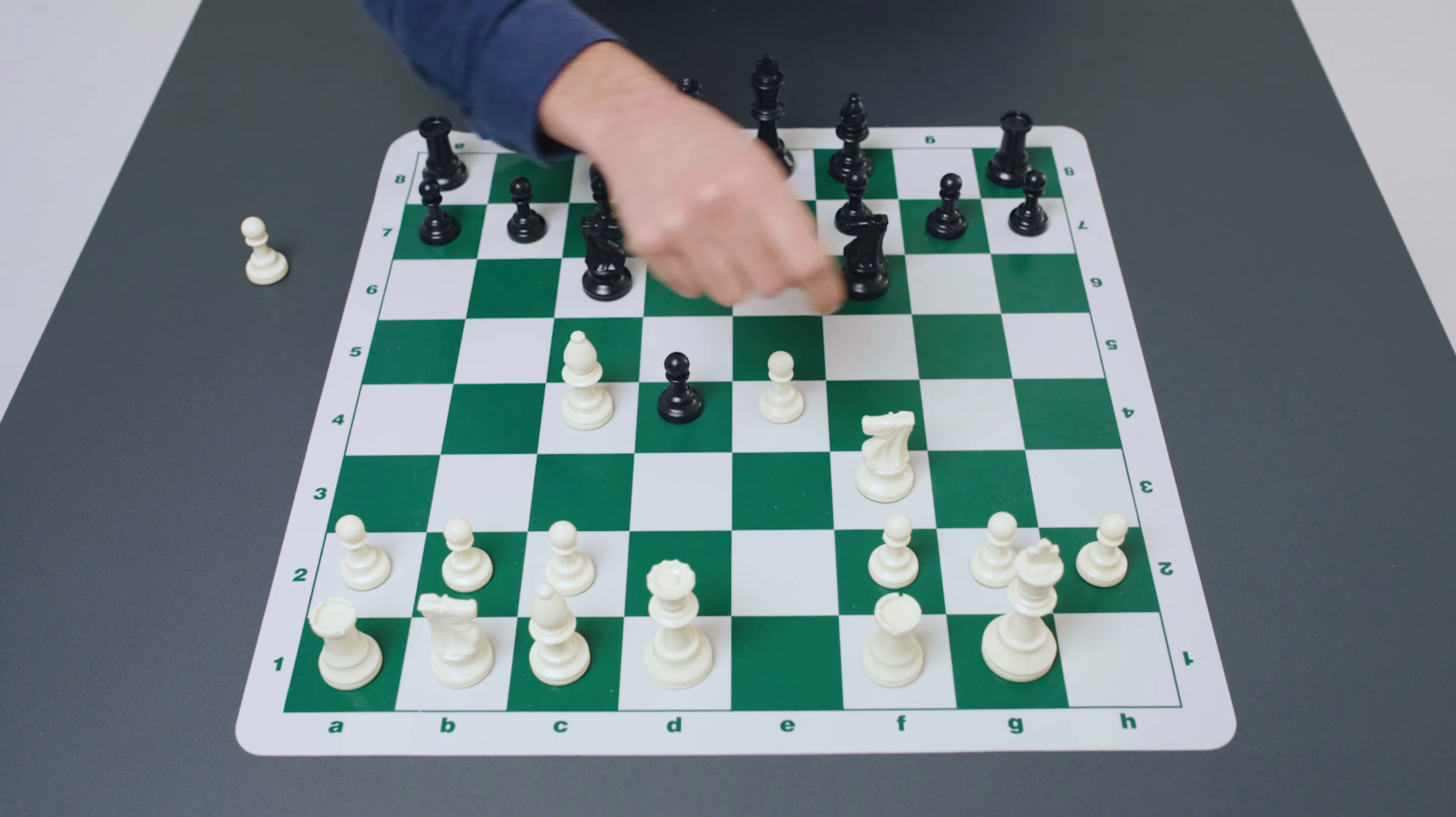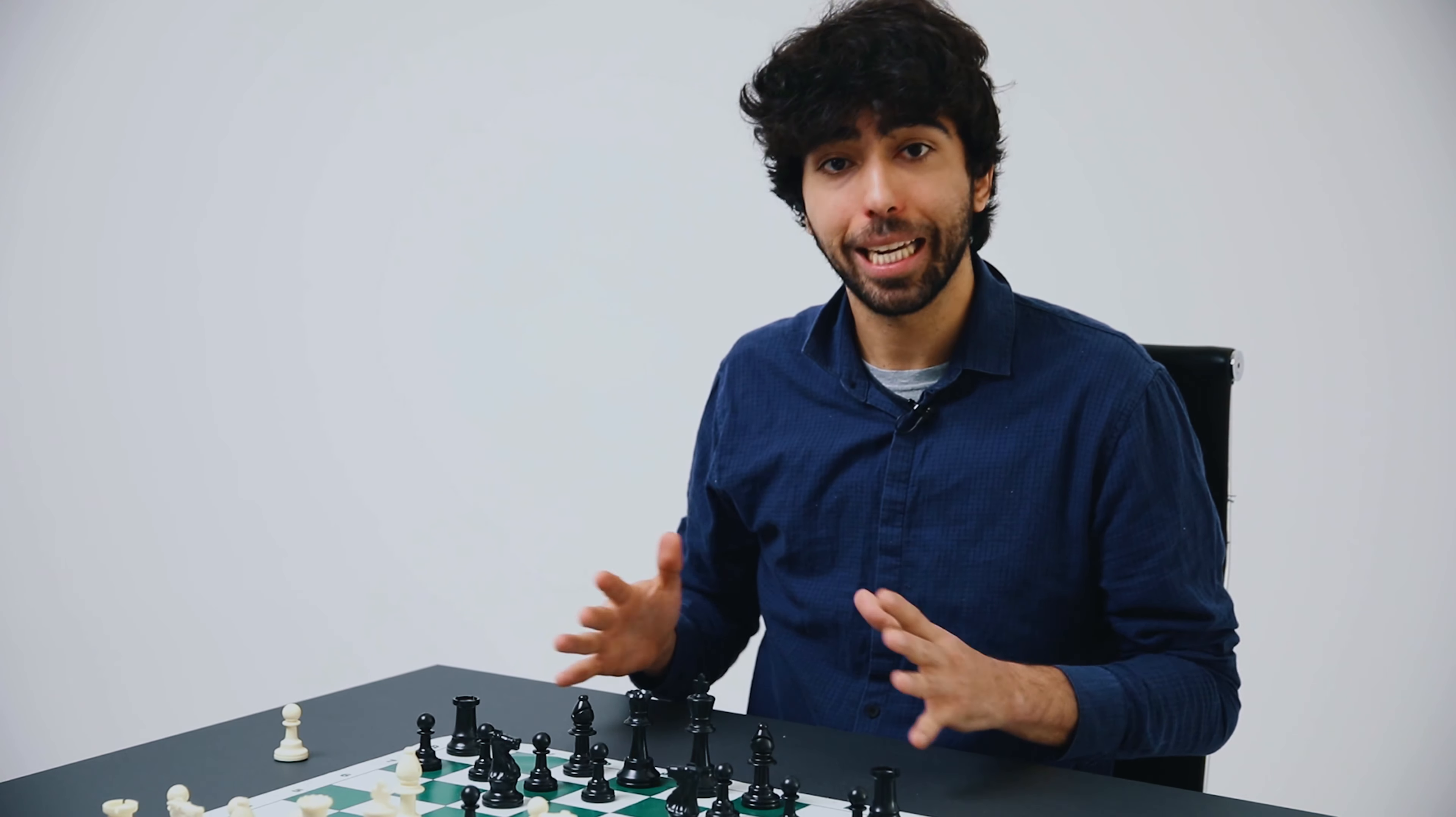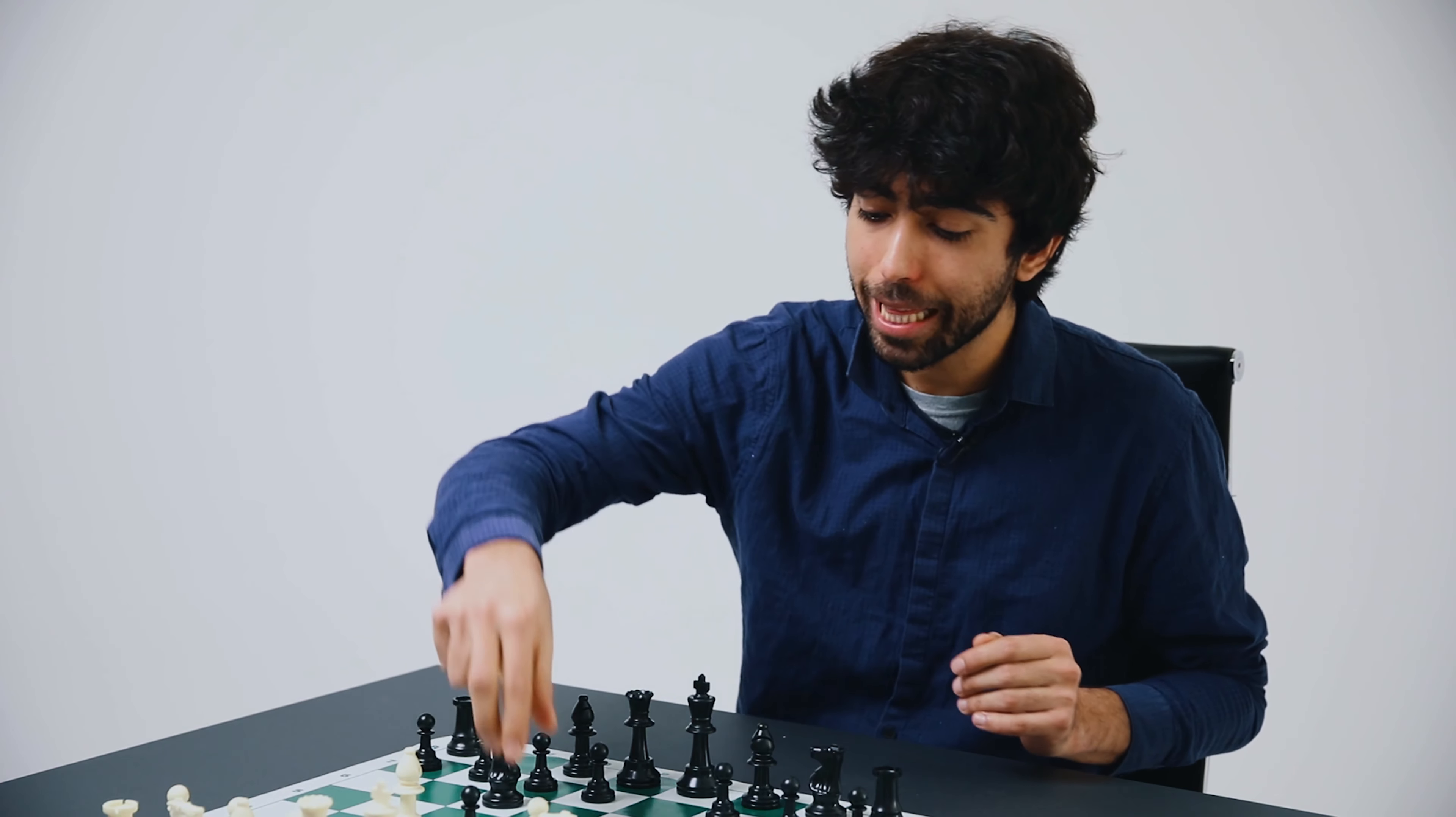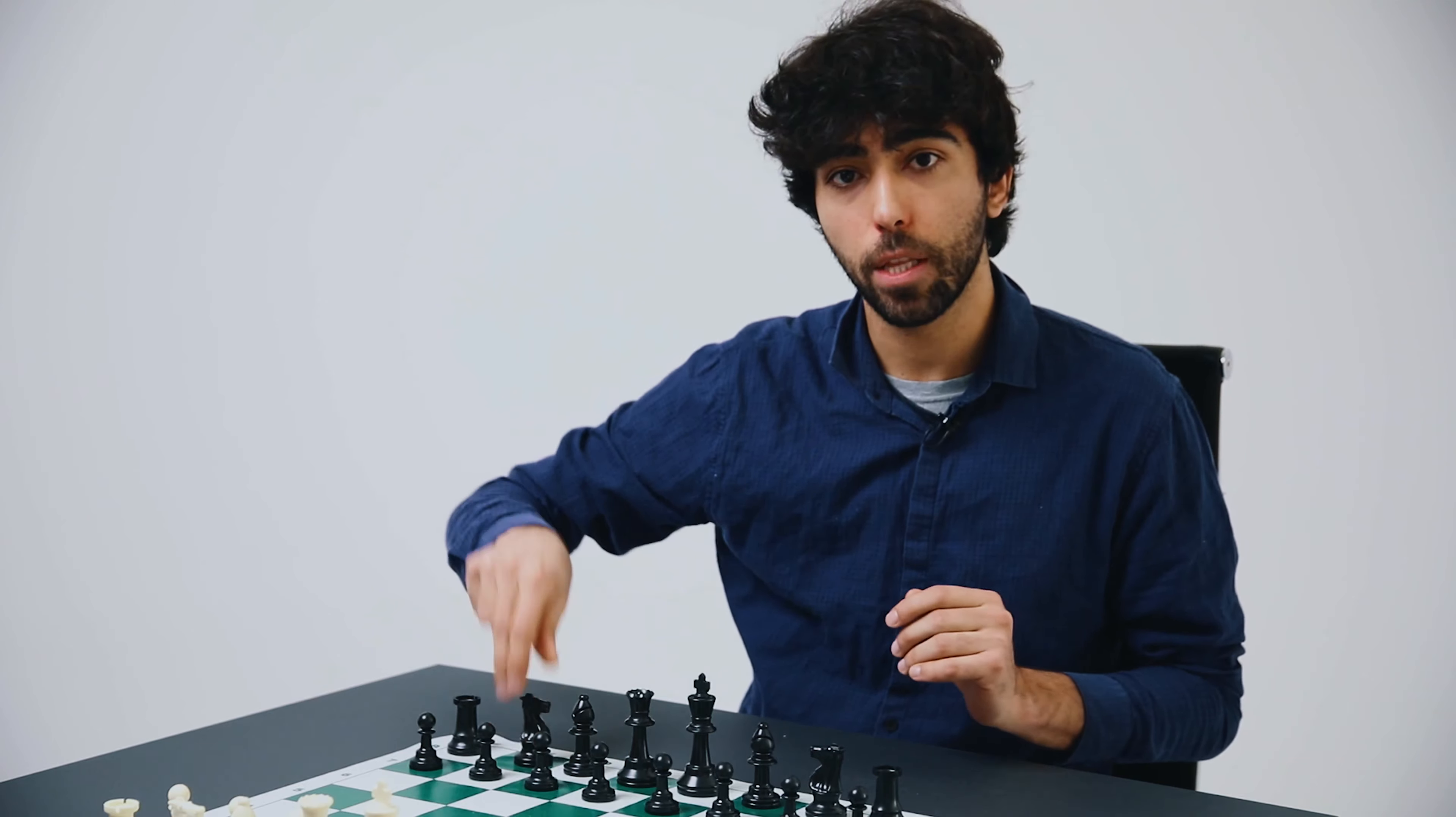And so here, after black goes knight to f6, we see that we have arrived via a different move order via the Scotch order at what's known as the Scotch Gambit. The reason why it's called the Scotch Gambit is simply because this is the most popular move order by which players arrive at this position.